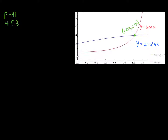Now here we are with number 53 on page 441. I'm looking at a region R that is the area in the first quadrant enclosed by the y-axis, the curve y equals 2 plus sine of x (the blue curve), and the curve y equals secant x (the red curve). They intersect for the first time in the first quadrant at 1.223, and so this is the region R that is described.